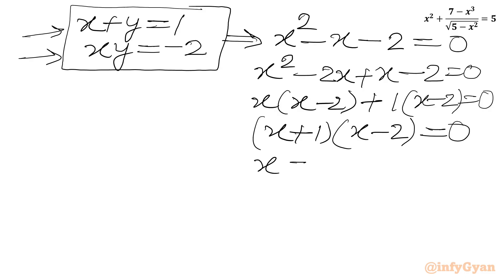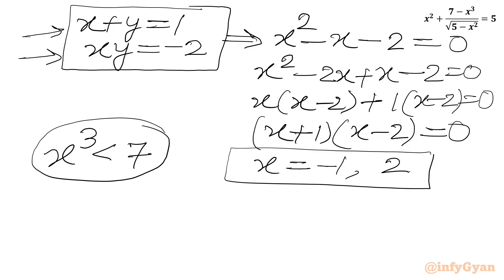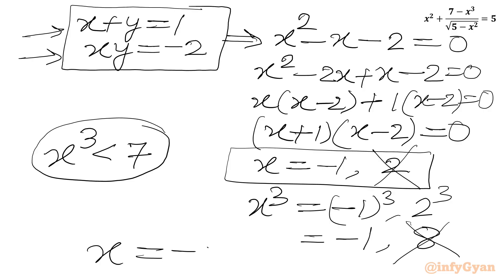Now checking our condition x³ < 7: for x = −1, (−1)³ = −1 < 7 ✓. For x = 2, 2³ = 8 > 7 ✗. So x = 2 is rejected. The only accepted real solution is x = −1.